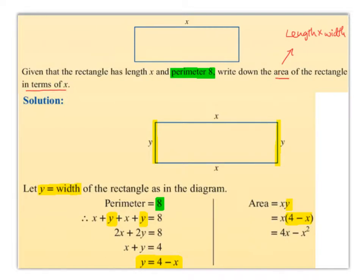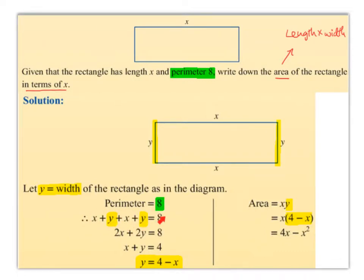So we want to come up with the area of the rectangle in terms of x — in terms of x just means x is in our answer. We know area is length times width. We're going to let y equal the width of the rectangle. So this is x, this is also x, we're going to call this y and this y. We know the perimeter equals 8, so x plus y plus x plus y equals 8, giving us 2x plus 2y equals 8.